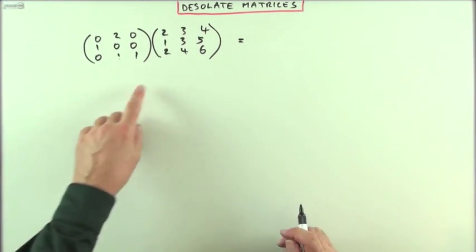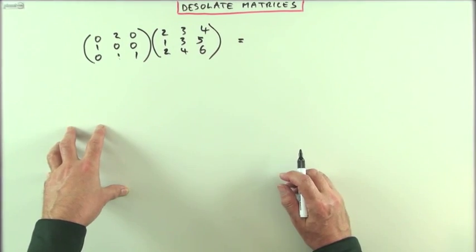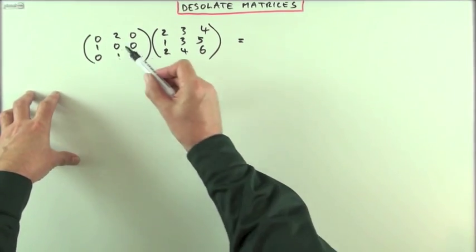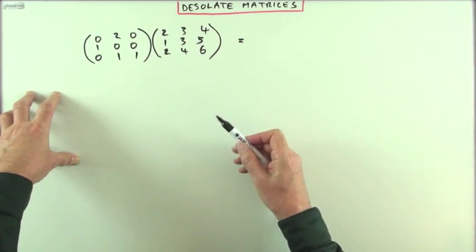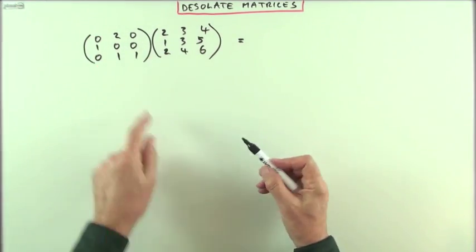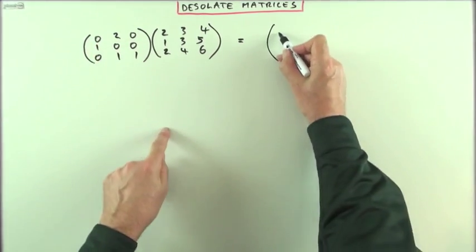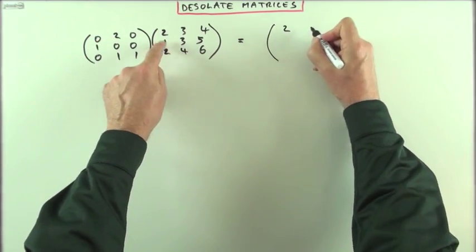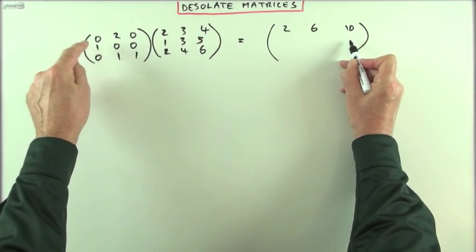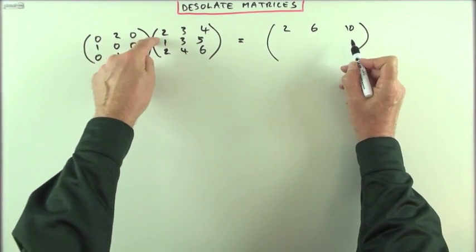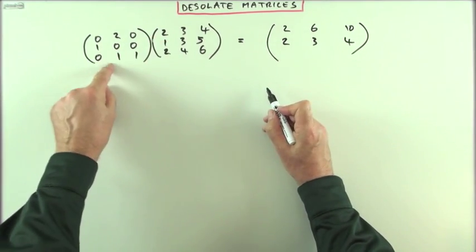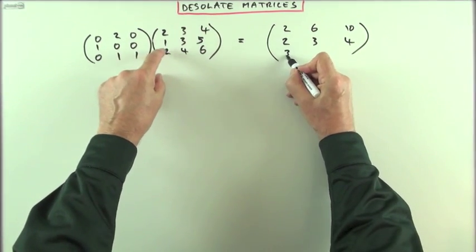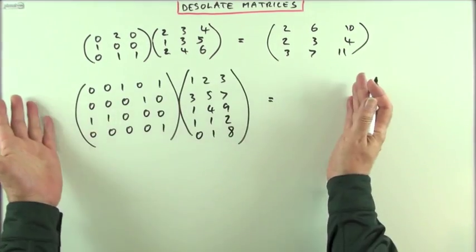Here's a simple worked case: a three-by-three times a three-by-three giving a three-by-three answer. Not doing individual row-times-column multiplications, but considering it as a composition of elementary matrices - it's a pre-multiplication, so I'm considering row operations. Each row produces the corresponding row in the answer. The top row of the answer is two lots of the middle row, so that's 2, 6, 10. The middle row comes from the top row: 2, 3, 4. The bottom row is row two plus row three added together: 3, 7, 11.